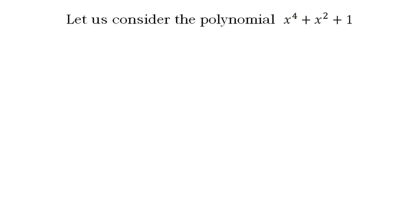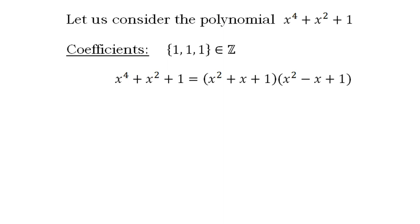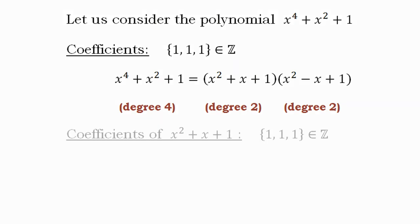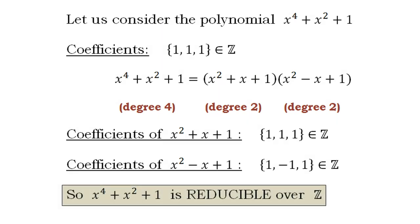Let's now take this polynomial. The coefficients of this polynomial are all integers. This polynomial can be expressed as a product of these two factors. The degrees of both these factors are less than the degree of the given polynomial, and the coefficients of both these factors are integers. So the given polynomial is reducible over integers.